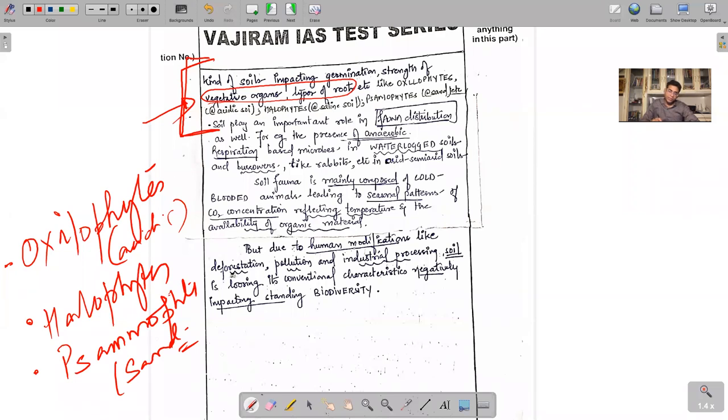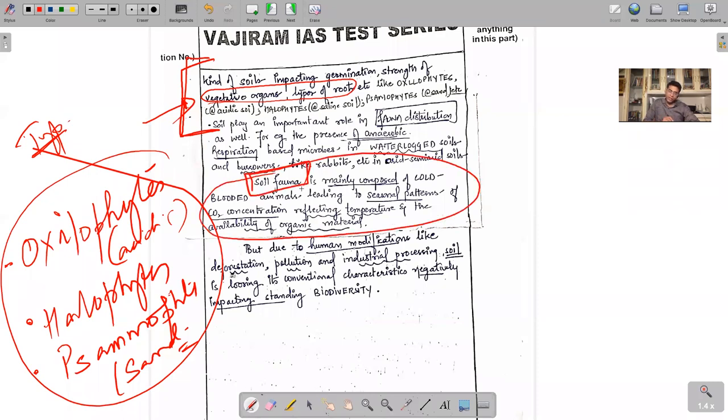Soil plays a very important role in type of plants. Soils are important for microorganisms, soils are important for soil fauna. Then conclude how we are losing soils but they are important for biodiversity. Not a complete answer, but indicative of what I mean by biogeographical significance.